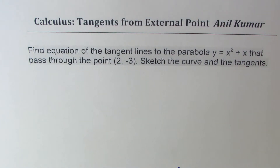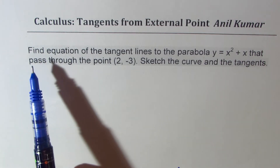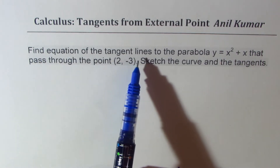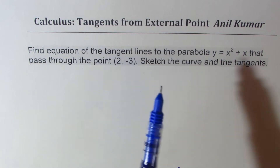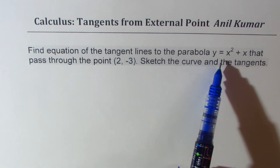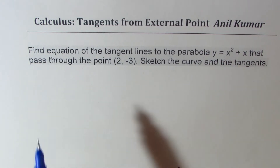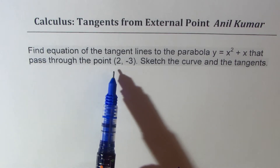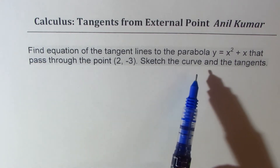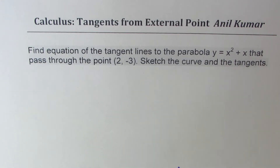I am Anil Kumar sharing with you a very interesting question on finding tangents when a point is given and equation of a curve is given. The question is: find the equation of the tangent lines to the parabola y equals x squared plus x that pass through the point (2, -3). Sketch the curve and the tangents.